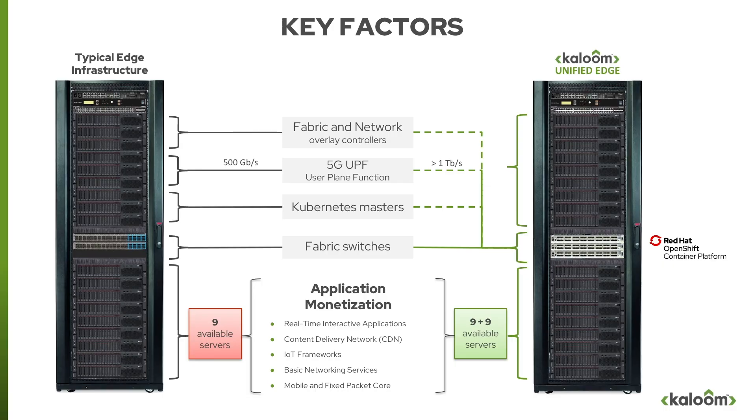With the unified edge, the fabric controller, the UPF control plane function as a container networking function, and all capability masters run on the Xeon host processors available inside the networking switch. The switches also run the UPF data plane at terabit-per-second speed with microsecond latency. Therefore, all 18 servers are available for running user applications, making the unified edge the most cost-effective OpenShift container platform for telco in the industry.